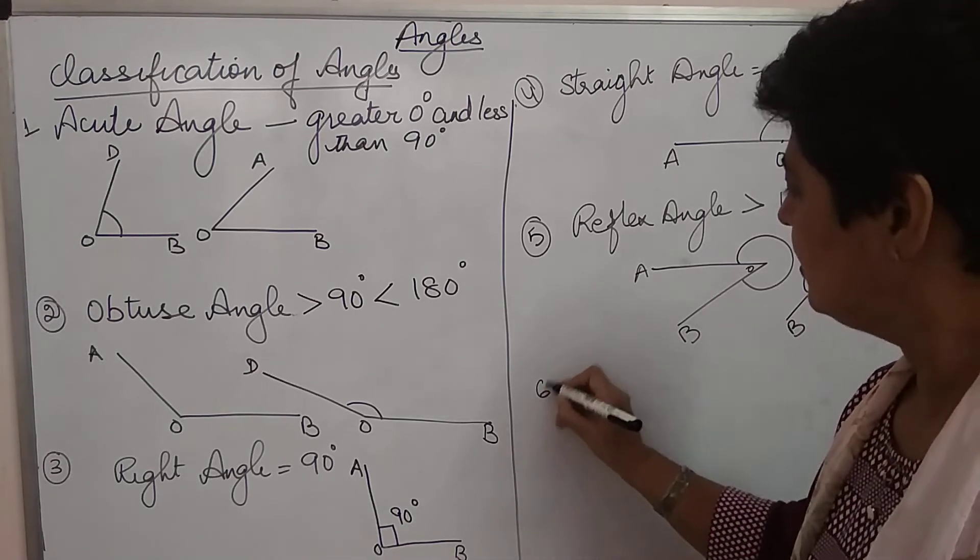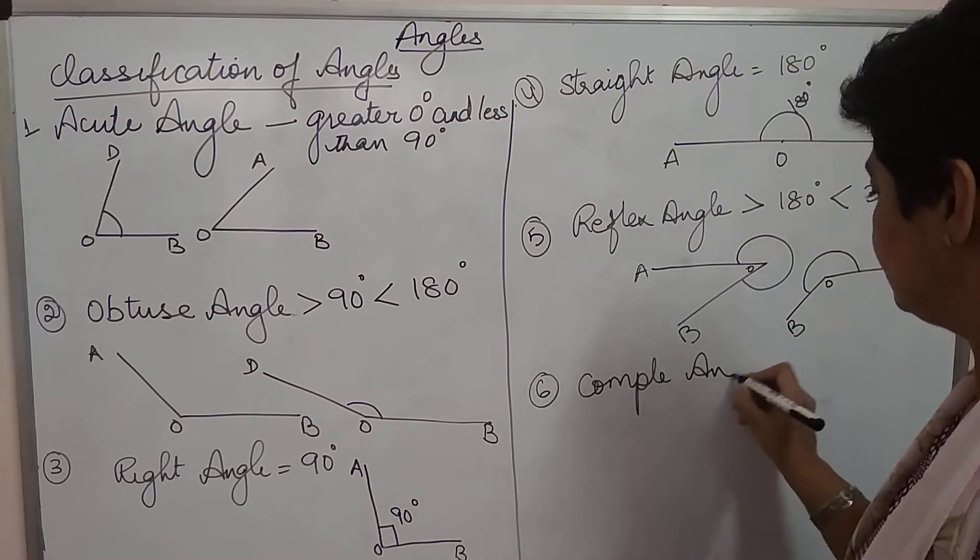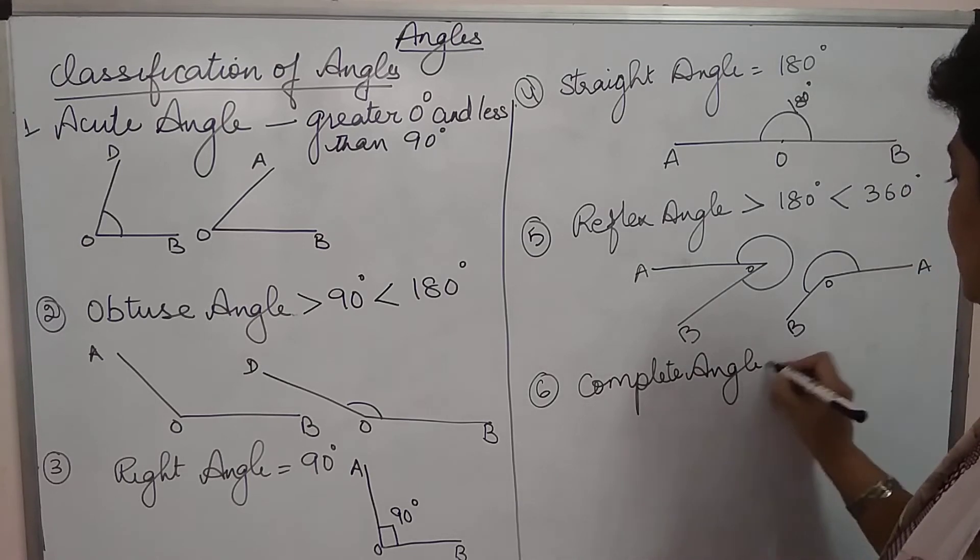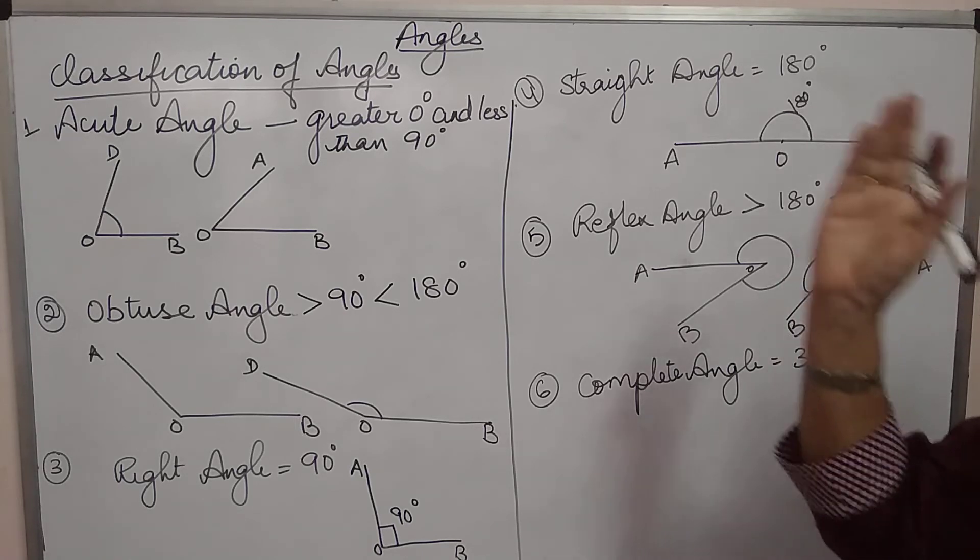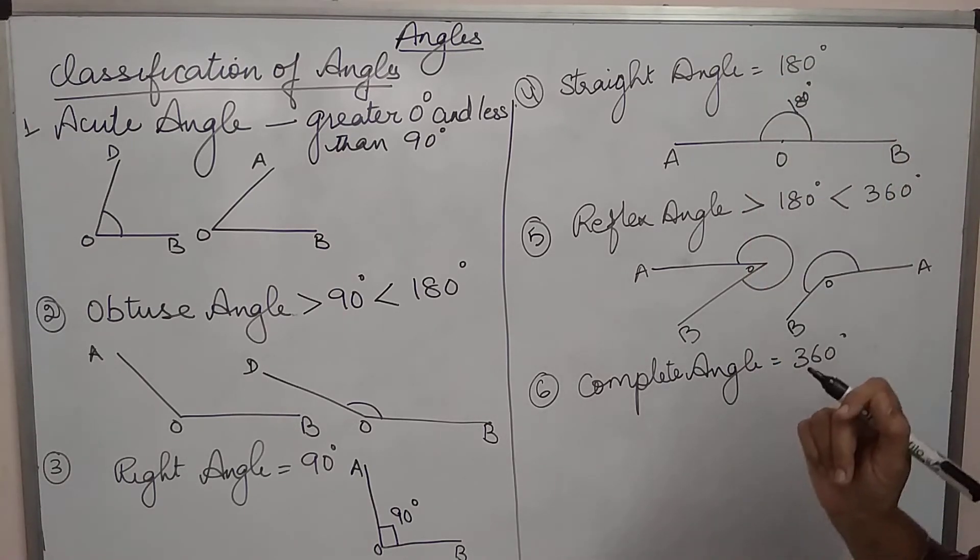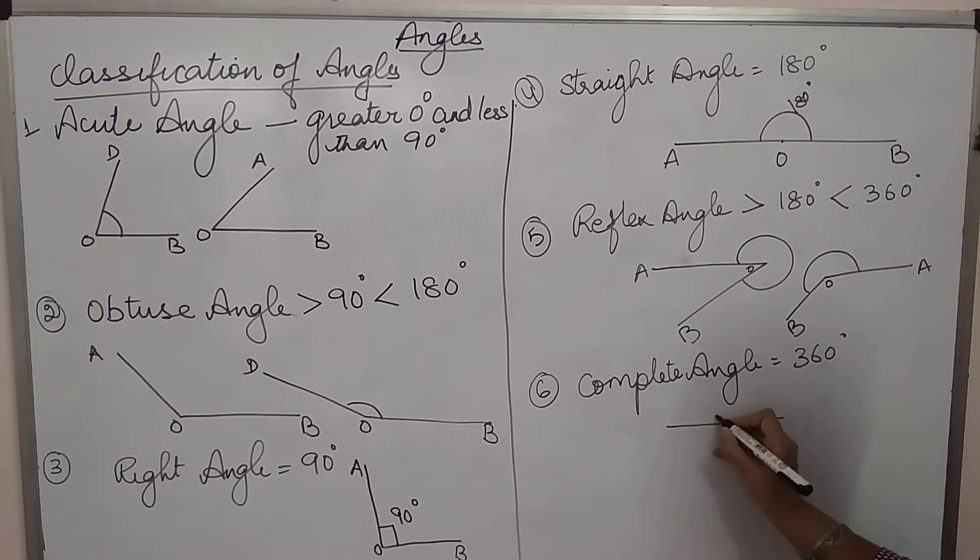Next, complete angle is equal to 360 degree. How the hands of the clock look when it's 12 o'clock. They are in a straight line. The hours hand also and the minutes hand also. So, vertex, this is AOB and this on the outer is 360 degree.